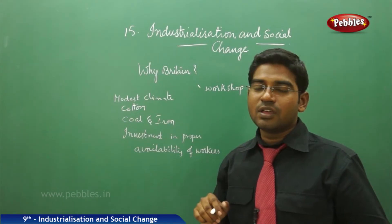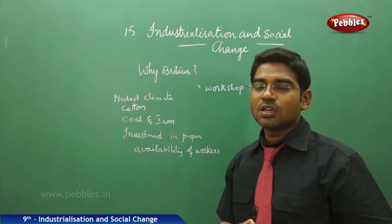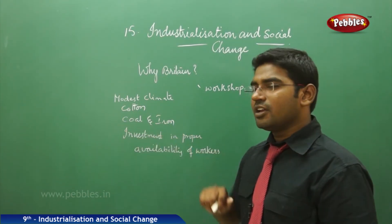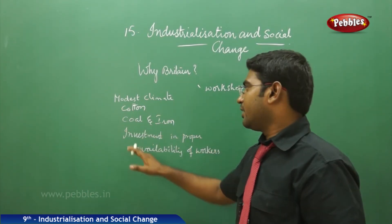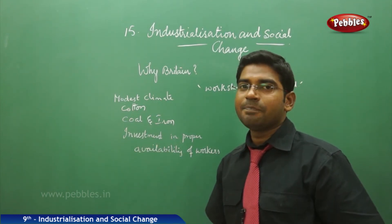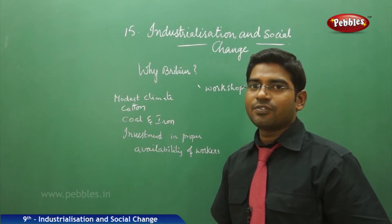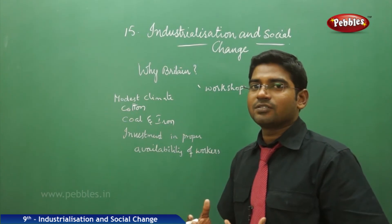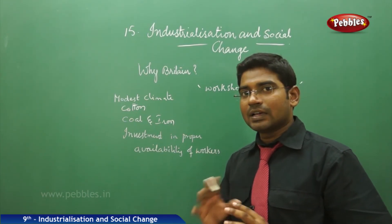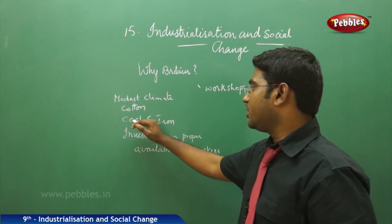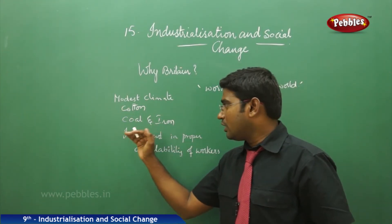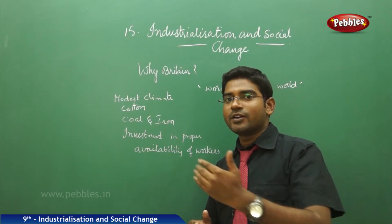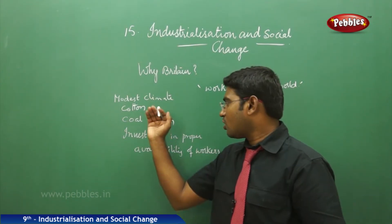Among the benefits England had were modest climatic conditions which truly supported cotton crop cultivation. There was also the availability of abundant coal and iron simultaneously, which provided good supply for electricity and for the maintenance and manufacturing of industrial products. Coal was needed for burning, and for transportation, England had very good transport facilities compared to Germany and France.